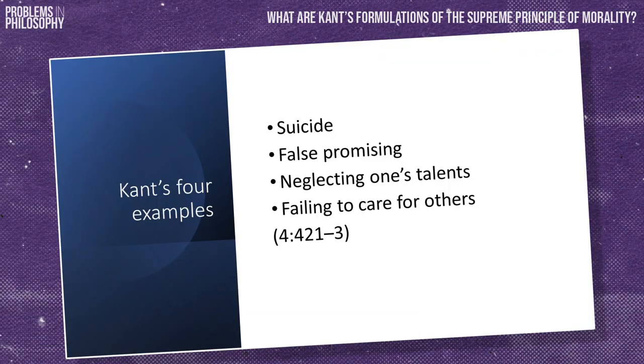Before giving his other variants, Kant then applies these first two variants to four key examples: the example of false promising discussed already in section one, but also the examples of suicide, neglecting one's talents, and the failure to care for fellow human beings. In each of these cases, Kant tries to bring out how the maxim that contravenes the relevant duty suffers from a fundamental incoherence or contradiction if we were to take it to be a natural law. This can happen in two ways. Either we cannot even conceive it to be a law — for example, as we saw in section one, lying promising would necessarily destroy itself — or we cannot will it to be a law, for example, no natural being with needs could will there to be a world in which no one helps anyone else, as this would be self-defeating.